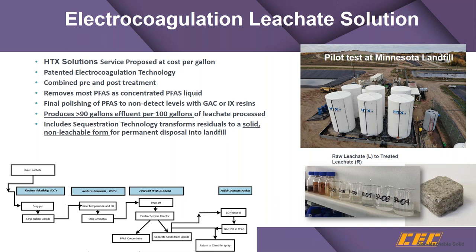Another technology we've looked at is electrocoagulation. This is a process that can help remove and destroy PFAS constituents. It requires a lot of pretreatment because without it there's going to be a lot of foaming — the alkalinity has to be removed either biologically or stripped out, and the residual is a smaller amount. One company we've been speaking with is HTX down in Texas. They have a patented technology and also approach this as a service where they will put in a system and charge a cents-per-gallon fee, so there's very little capital initially expended.